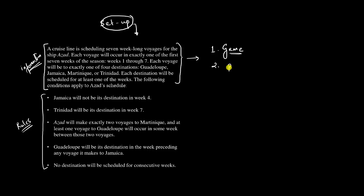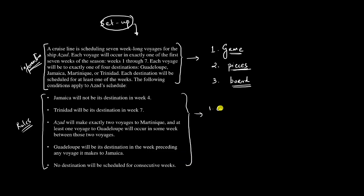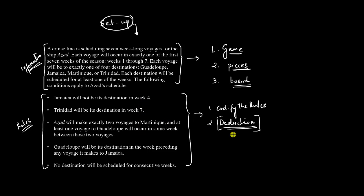We also need to understand the game pieces — those elements critical for this particular game — and we are looking at a game board or diagram we can use to fill in the information. Once that happens, we gather information by codifying the rules. We must ensure all rules are converted into some sort of code on paper, and we must make as many deductions as possible in the initial stage. We can make immediate deductions from each rule and combine rules to make overall deductions.